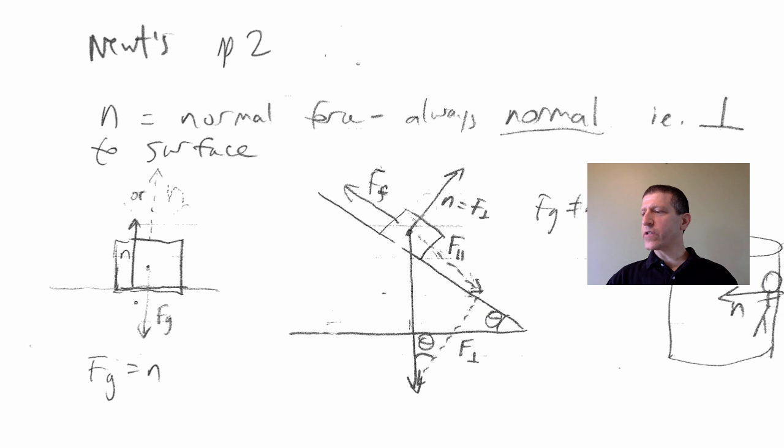We've dealt with the situation of an object sitting on a table. Let's now deal with the situation of an object which is going down a ramp.